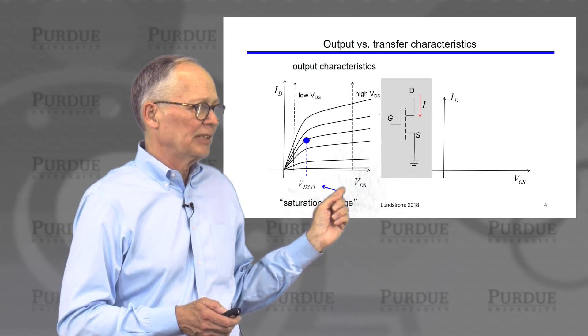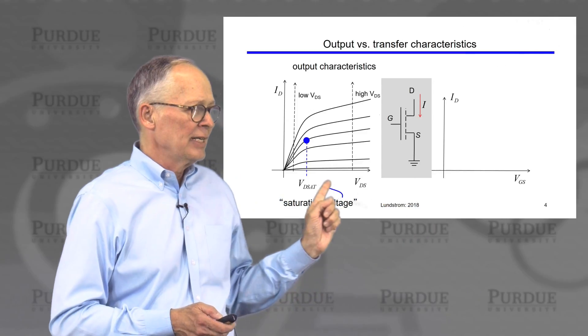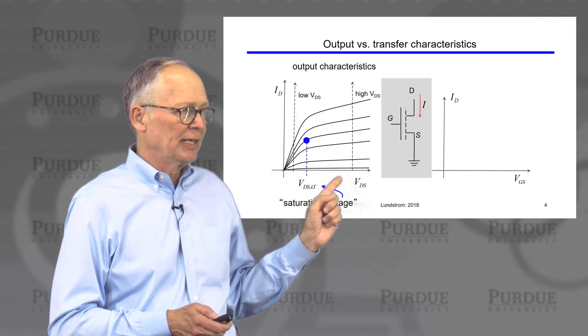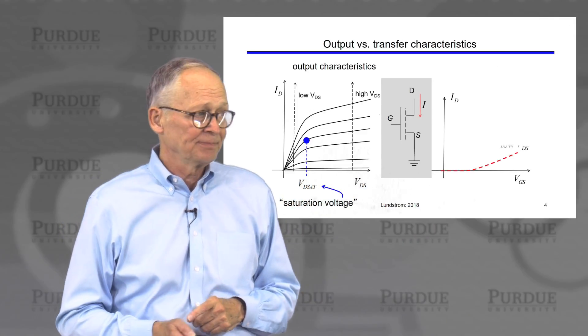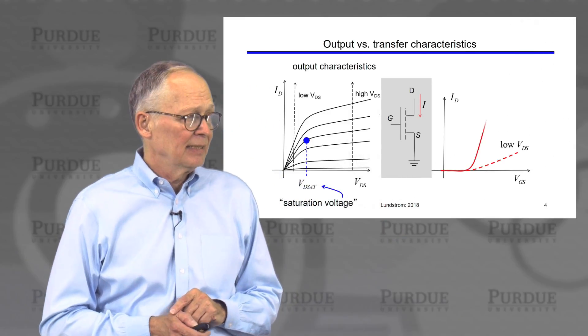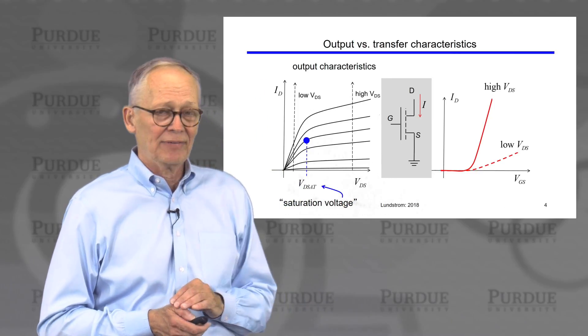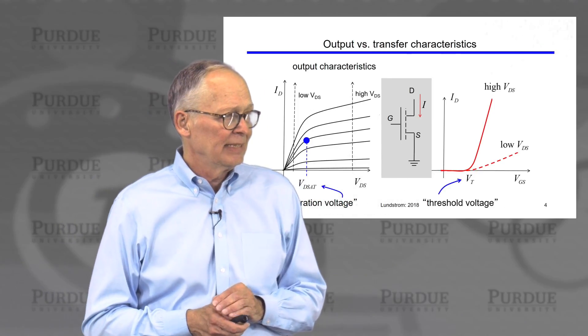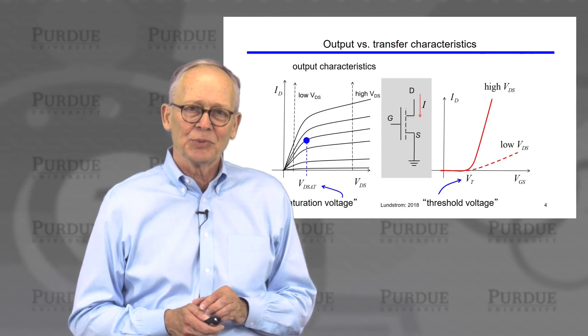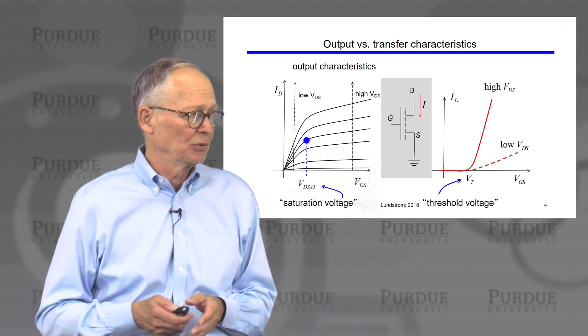Now we could also plot the transfer characteristics, output current versus input voltage. And we could do it at a low voltage on the drain or at a high voltage on the drain. If we do it at a low voltage, we get a characteristic that looks like this. If we do it at a high voltage, not surprisingly, we get more current. We have a characteristic that looks like this. The current begins to flow when the gate-to-source voltage is bigger than a critical voltage known as the threshold voltage.